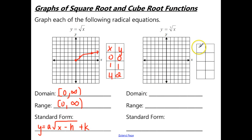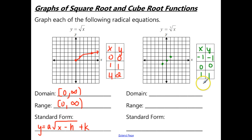For the cube root function we also use three critical points: negative 1, 0, and positive 1. The cube root of −1 is −1, the cube root of 0 is 0, and the cube root of 1 is 1. If you only plot those three points it actually looks like a straight line, but it's not, so we want to look at two more points: x = −8 and x = 8.